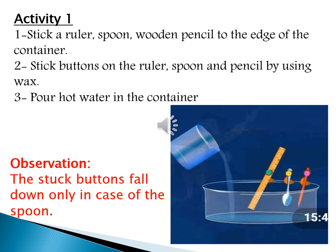In this lesson there are some activities. Let's start with Activity 1. Get a glass container and three different materials: a plastic ruler, a metallic spoon, and a wooden pencil. Stick a button on each one using a drop of wax, then stick the three materials to the edge of the container. Add hot water to the container. What will you observe? You will observe that the button stuck on the metallic spoon falls down.